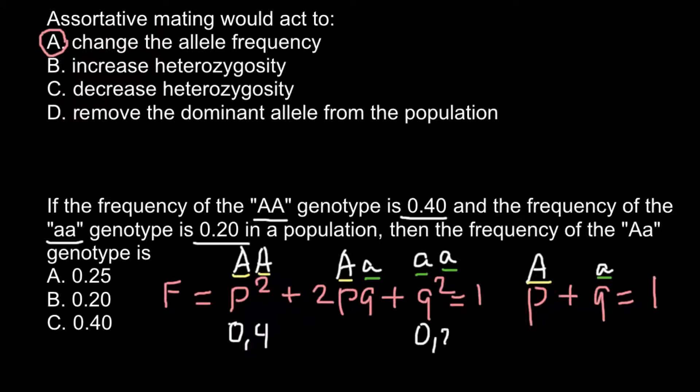And we know that all these frequencies should equal to 1. It is easier to determine the frequency of the heterozygous. So we have 0.4 here.